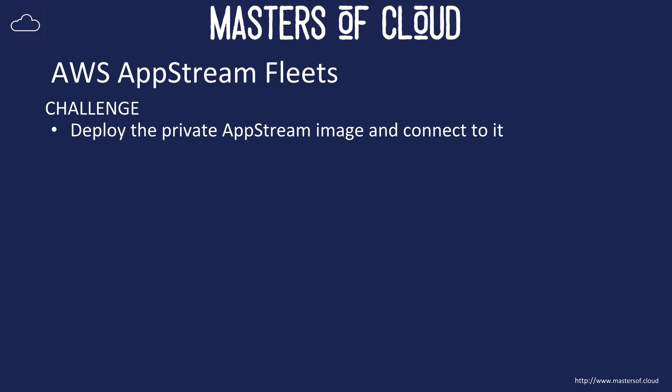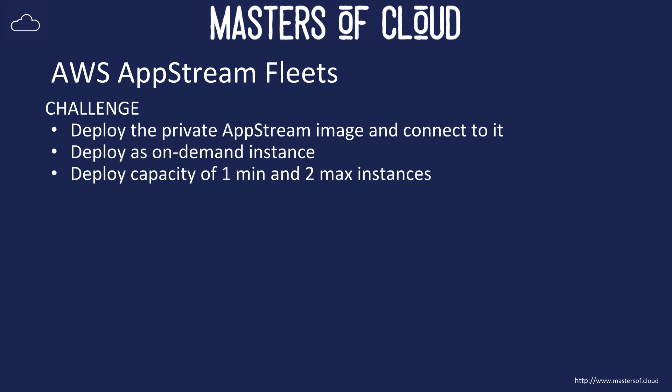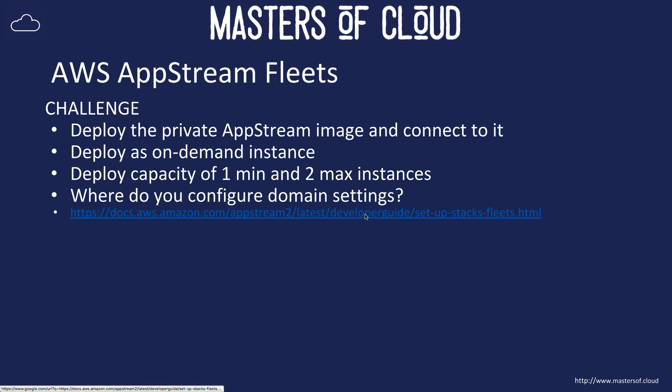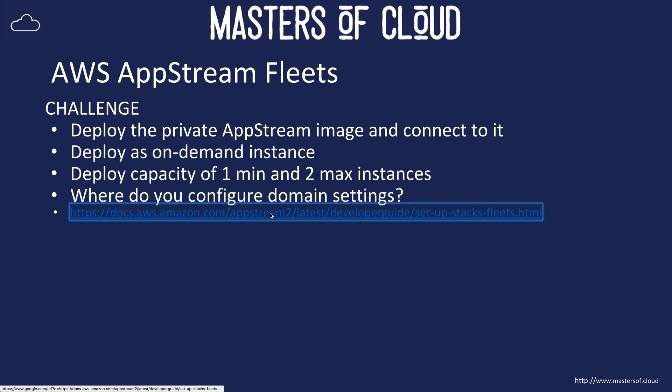I challenge you to go and create your own fleet — deploy the private AppStream image we created previously as an on-demand instance, with a capacity of one minimum and two maximum. You may encounter instance limits and need to raise a ticket with AWS. Also, see if you can figure out where to configure domain settings for these instances — whether that's in the image builder process or within the fleet build process. There's also a link to the developer guide for setting up stacks and fleets within AppStream 2.